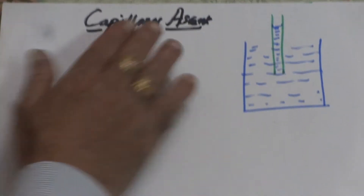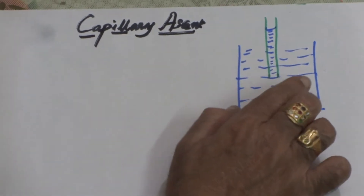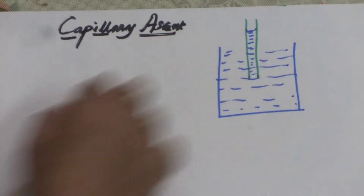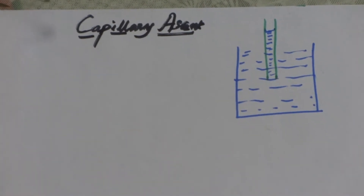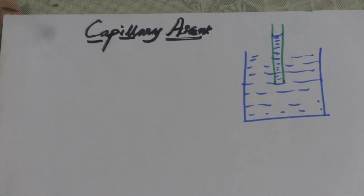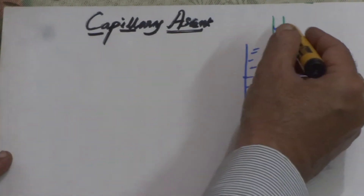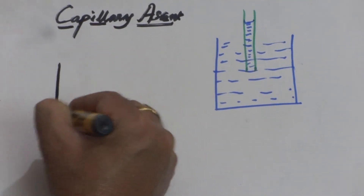In capillary ascent, if you put a capillary tube in any container of liquid, the liquid rises just because of surface tension. We want to see why the rise takes place — that's the first thing. The second is: what are the different forces acting at that particular point of time? Let us draw the capillary very large just to make it visible.